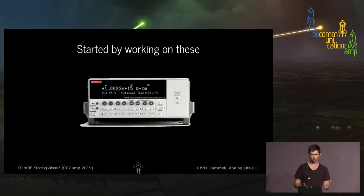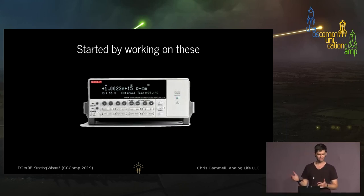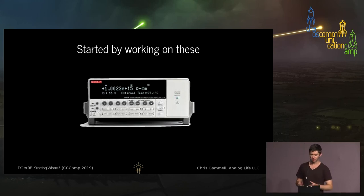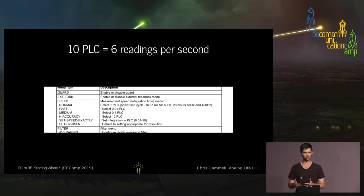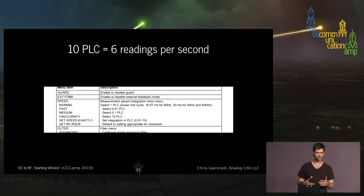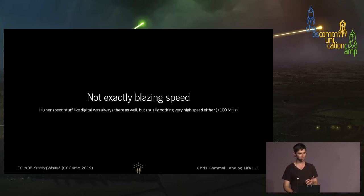My past: I started by working on an electrometer. Anyone know what this is? It's used by material scientists — you push 1,000 volts into a material and see how much leakage current comes through it, down to femto amps. It's a really cool thing, but it's really slow — 10 PLC, power line cycles, means about six readings per second. Inside, you're basically integrating your measurements over and over. It's truly DC measurement equipment.